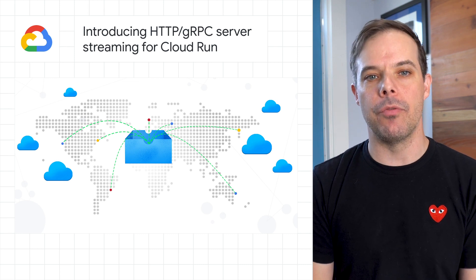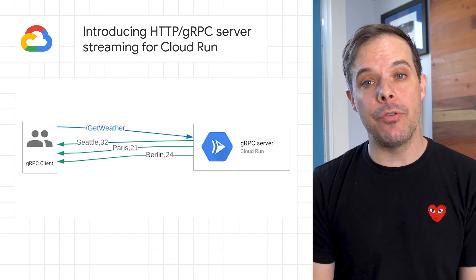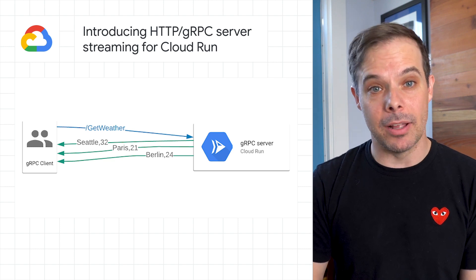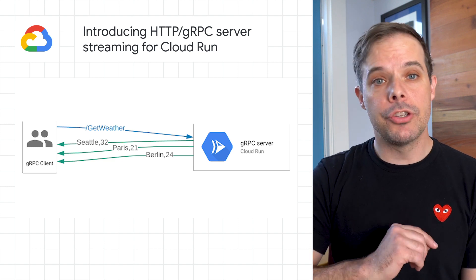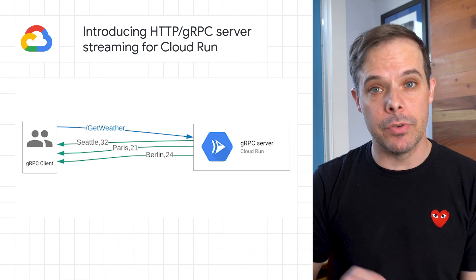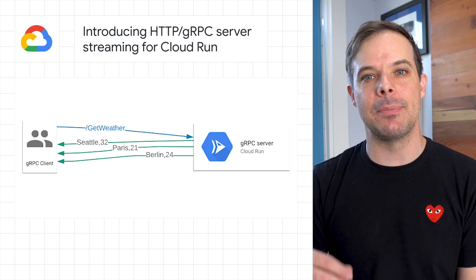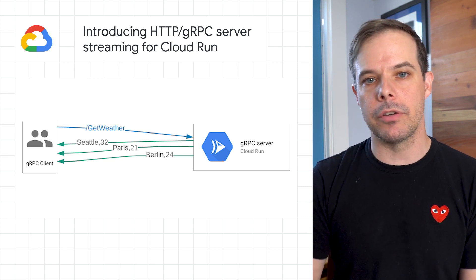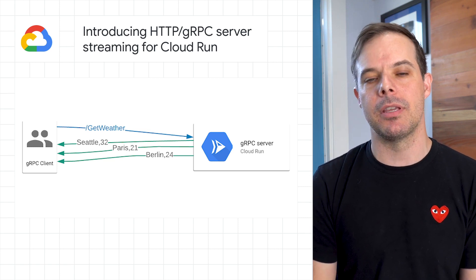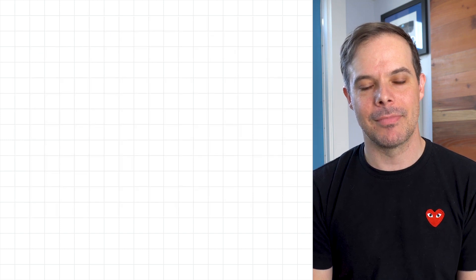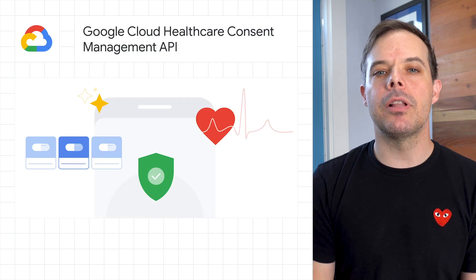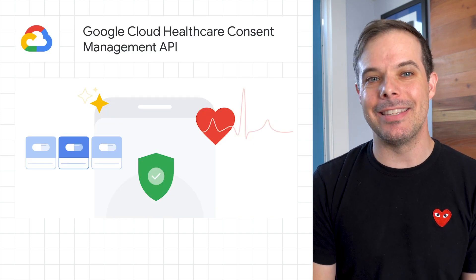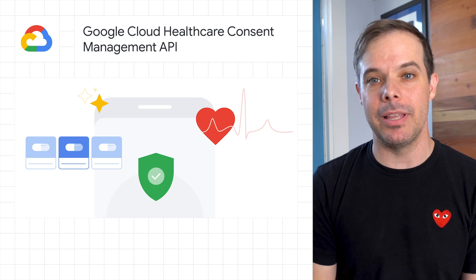We recently introduced server-side HTTP streaming for your serverless applications running on Cloud Run. With it, your Cloud Run services can serve larger responses or stream partial responses to clients during the span of a single request, enabling quicker server response times for your applications.